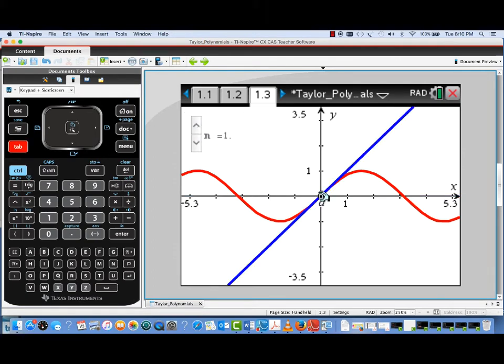Now, if I change the degree up to one, now I get a first degree, or actually a tangent line approximation. As I move the point A, the tangent line is floating along the curve, always tangent to the point where X is equal to A.